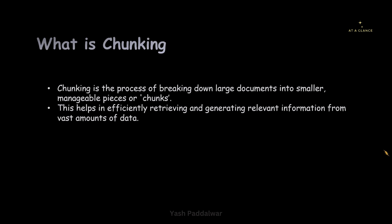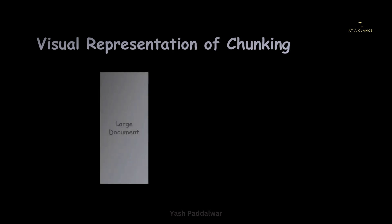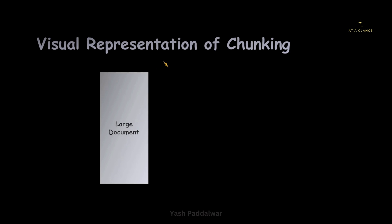Now we'll see the visual representation of how chunking works. Let's say we have a larger document — a larger document can be the entire knowledge base containing all the information relevant for your RAG pipeline for any particular use case. If we try to feed this entire large document into the RAG pipeline, it will be very difficult for retrieval because the entire large document will be embedded into a single vector. That single vector will always be retrieved whenever any query is fired by the user, making it very difficult for the large language model to find relevant results.